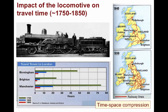For instance, travel from London to Manchester in the horse and buggy era of 1750 would take upwards of three days' travel, whereas a century later, that time was reduced to around six hours. This is what time-space compression is all about.